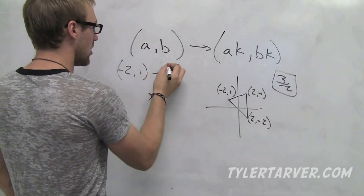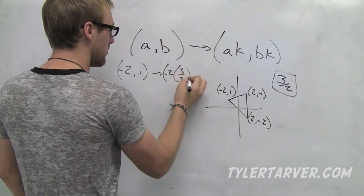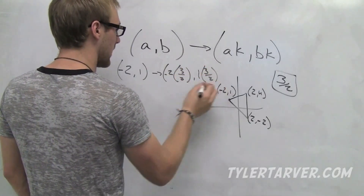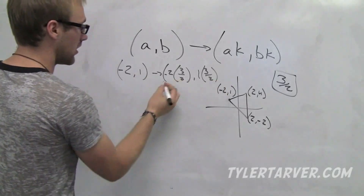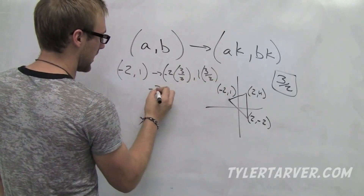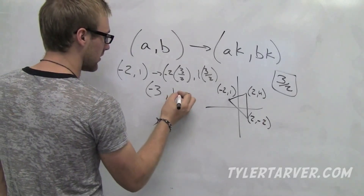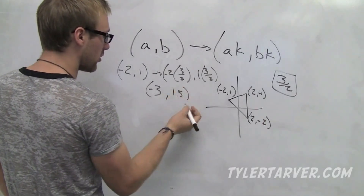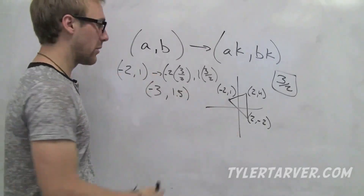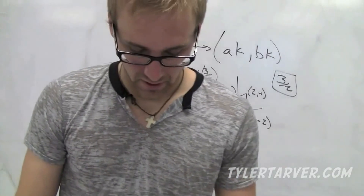All we do is take each coordinate and multiply by 3 over 2. So negative 2 times 3 over 2, and 1 times 3 over 2. Our new coordinate would be negative 3 and 1.5. Then we do the same thing for the other two vertices and plot them, and it changes our figure.